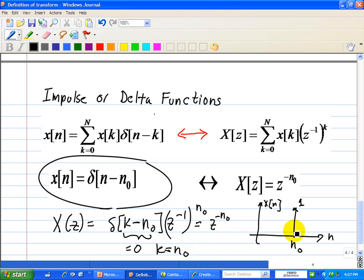Therefore, this function is z^-n₀. That's the beauty of delta functions—they exist only at one point, so you evaluate in the time or n-domain at that single point by setting the delta function's argument equal to zero.